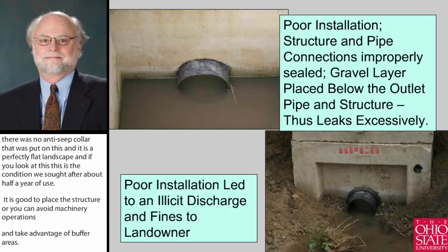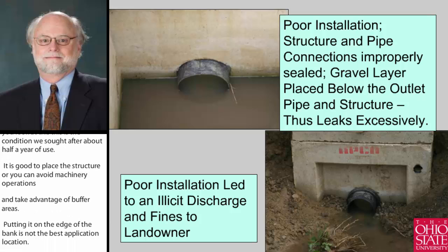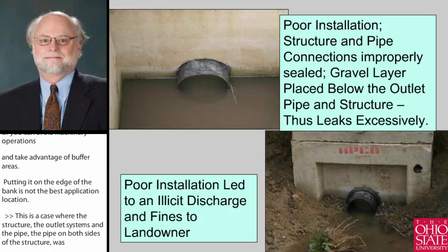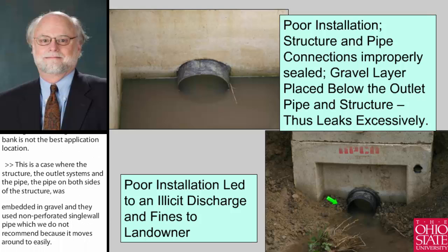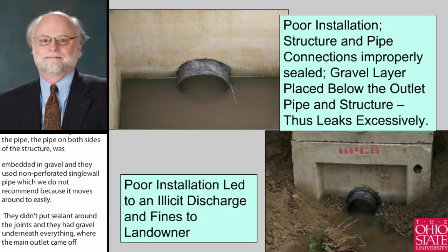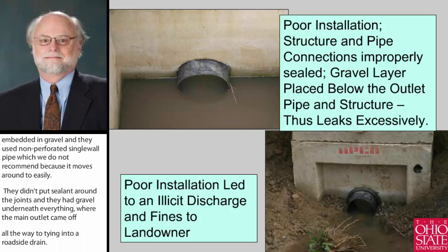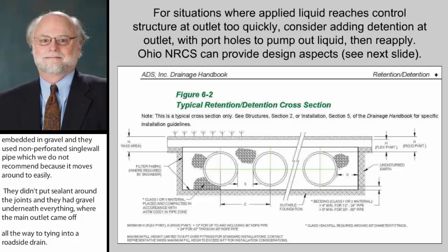This is a case where the outlet system — the tight line pipe put in on both sides of the structure — was embedded in gravel. They used non-perforated single-wall pipe, which we don't recommend because it moves around too easily, and they didn't use sealant around the joints. They had gravel underneath everything from the main outlet all the way to a roadside drain. This particular case involved an overhead irrigation system discharging treated wastewater, and this led to an illicit discharge citation. Doing it right is very important.